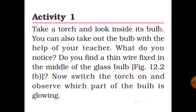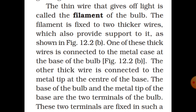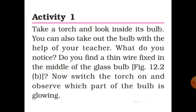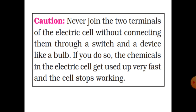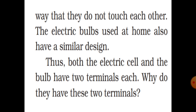Switch the torch on and observe: which part of the bulb is glowing? The thin wire that gives off light is called the filament. The filament is fixed to two thicker wires which also provide support to it. One of these thick wires is connected to the metal case at the base of the bulb; the other thick wire is connected to the metal tip at the center of the base.